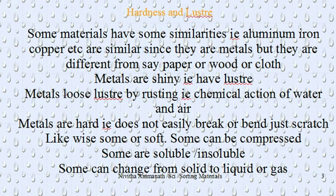Metals have a shiny surface — that is, they have lustre. So metals are hard and have lustre. Wood is also hard, but wood does not have lustre. Metals can lose their lustre by rusting. Rusting is a chemical process by which, due to the action of air and water, the metal loses its shine. That is why some old metal materials left outside in sun or rain will be of a different colour. Metals are hard, do not break easily, and have lustre.